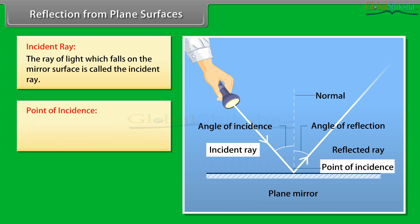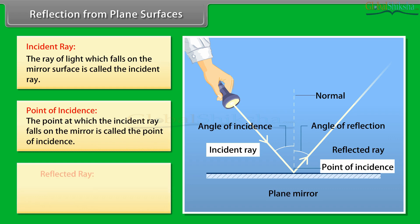Point of incidence: The point at which the incident ray falls on the mirror is called the point of incidence. The ray of light which is sent back by the mirror is called the reflected ray.